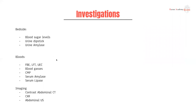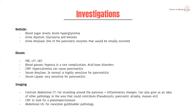In terms of investigations, we want bedside tests, bloods, and imaging. Bedside: blood sugar levels, because with shock to the pancreas you can get acutely elevated glucose — hyperglycemia. You can also do a urine dipstick, which can show up glucose and ketones. Pancreatic amylase can also be excreted into the urine and picked up as urine amylase, and it's a quicker test to do.